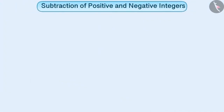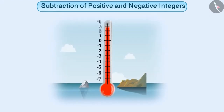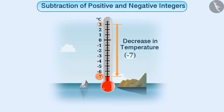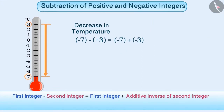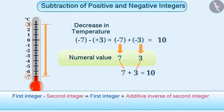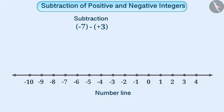In the same way, we can perform subtraction on a positive integer and a negative integer. Suppose the temperature at a place is 3 degrees centigrade. If it decreases and reaches minus 7 degrees centigrade, then the decrease in temperature can be found by subtracting plus 3 from minus 7. Even in this case, we will find the additive inverse of the integer that is being subtracted, that is minus 3. Then, we will add this to minus 7. As you can see, the sign is the same in both minus 7 and minus 3. Therefore, we will add the numeral values of these numbers and put the minus sign with the result. Thus, the result obtained is minus 10.